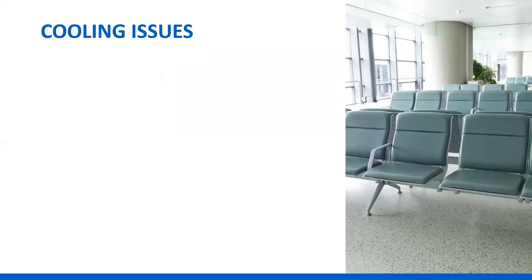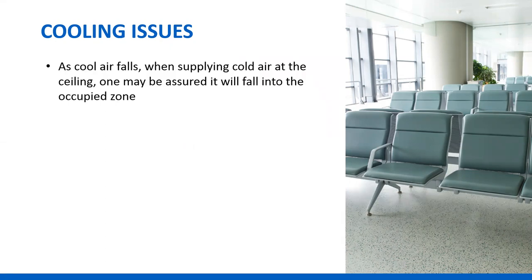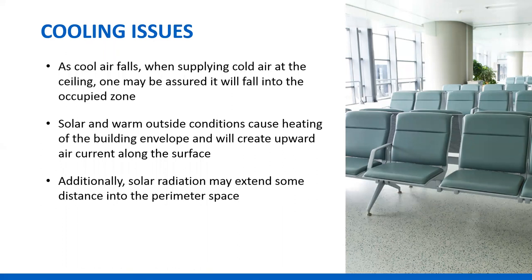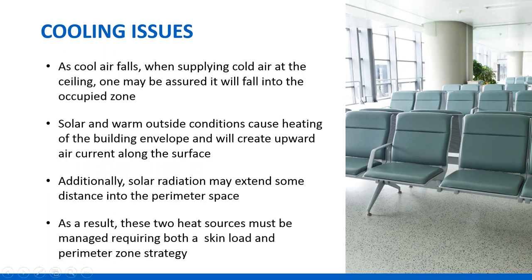Cooling is an interesting issue. You heat at the glass, but for cooling you've got to cool as far in as the sunlight will penetrate — in fall and spring when the sun is lower and it's still warm out, that can be quite a distance into the perimeter zone. As cold air falls, it's going to make it to the floor. We don't have to worry about cold air short circuiting. Because we need to deal with solar going further in, we may get upward air currents along the window surface and heat generated by furniture in the interior zone.